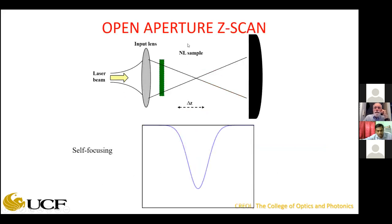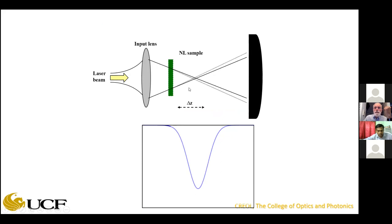Now let's say you also have nonlinear absorption in addition to nonlinear refraction. Remove that aperture and use a big detector so you don't miss any energy. The sample is thin, so there's no change within the propagation inside the sample. The self-lensing doesn't matter because you're still collecting all the energy.